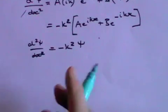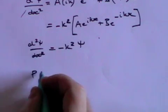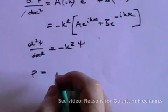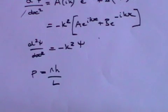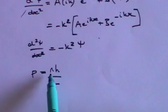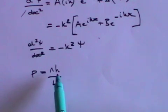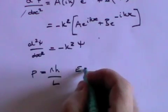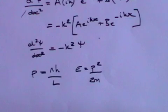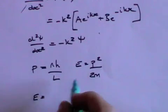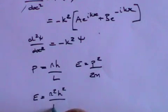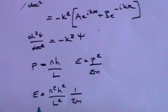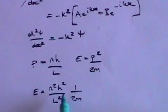Now, as before, we have already seen that momentum equals nh over L. We showed that momentum was quantized — n is an integer value, h is Planck's constant, and L is the length of the line along which the particle is moving in one dimension. Since E equals p² over 2m, consequently E equals p² which is n²h²/L², divided by 2m. That tells you that the energy of this free particle is quantized in these units.